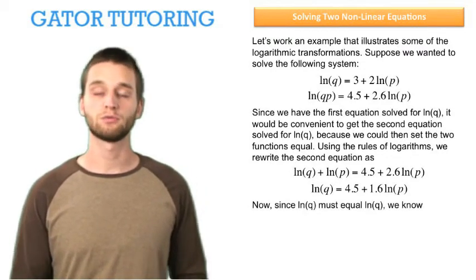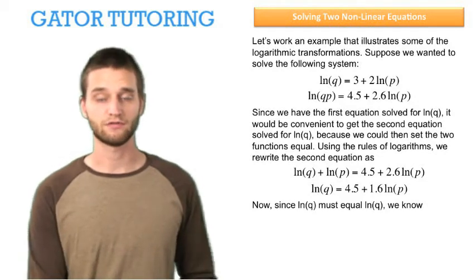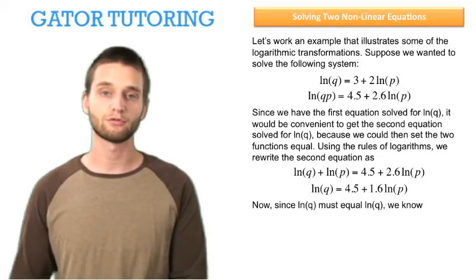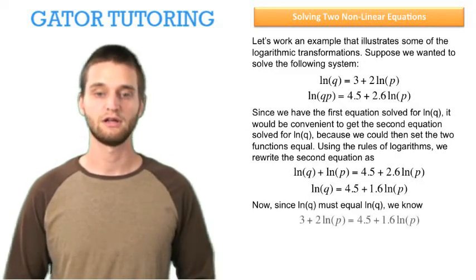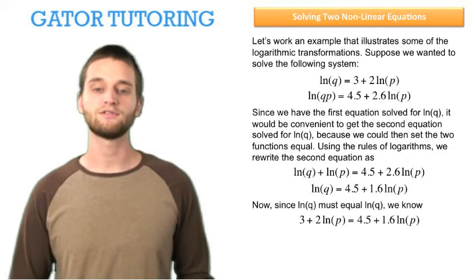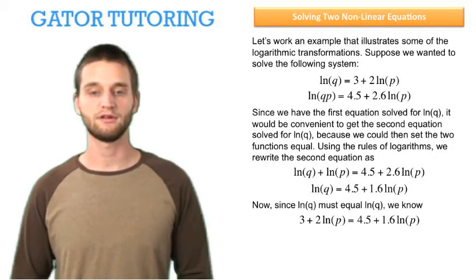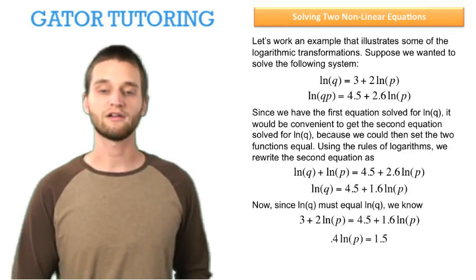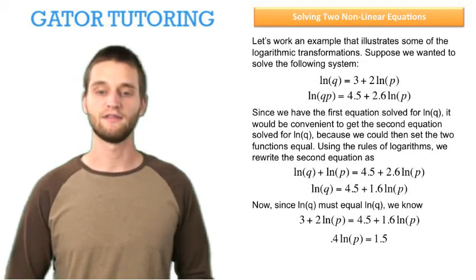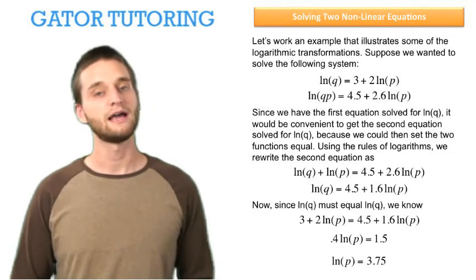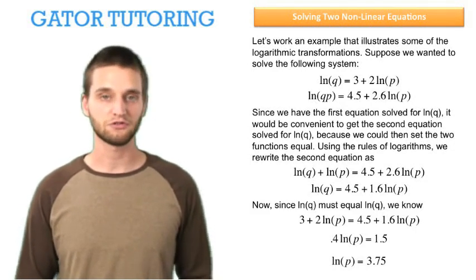Now, since we're finding a solution and the natural log of q must equal the natural log of q, we can set the functions on the right hand side of the equals sign equal to each other. So we know that 3 plus 2 times the natural log of p must equal 4.5 plus 1.6 times the natural log of p. We just get the constants on the right hand side and the natural log of p on the left hand side. Now we divide by 0.4 and we see that the natural log of p is 3.75.